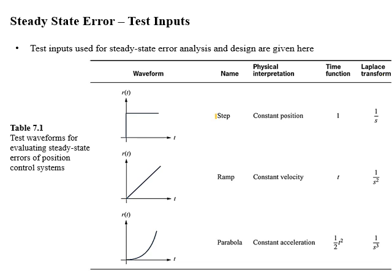These test inputs are step, ramp, and parabola. As we know, step represents a constant quantity, so it is used for constant position. Ramp is used to measure constant velocity. And parabola is used for constant acceleration. Time domain and Laplace domain representations of these inputs are given in the table.